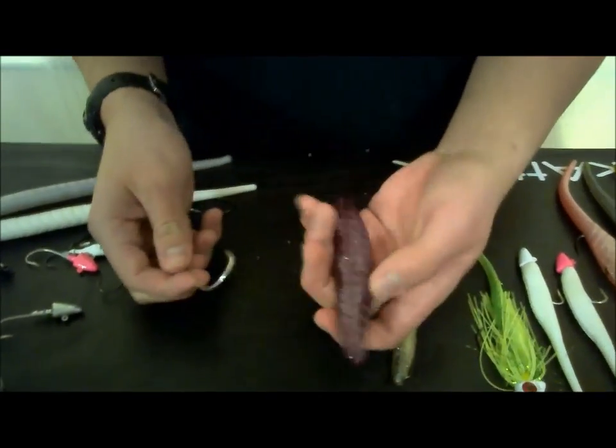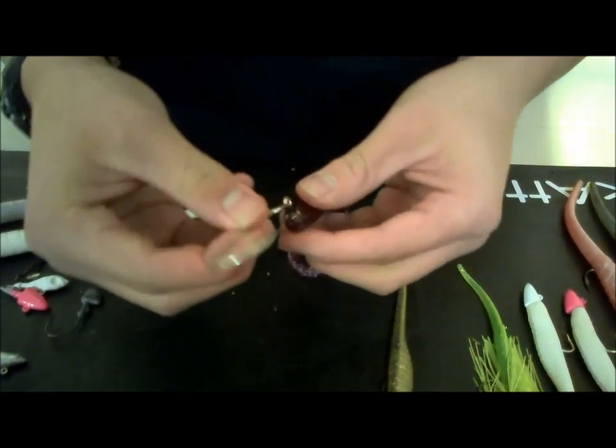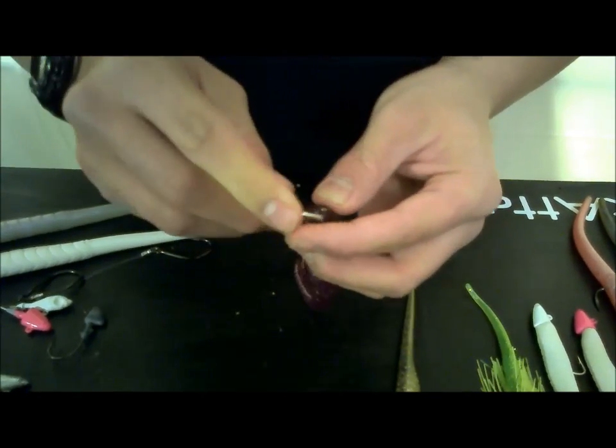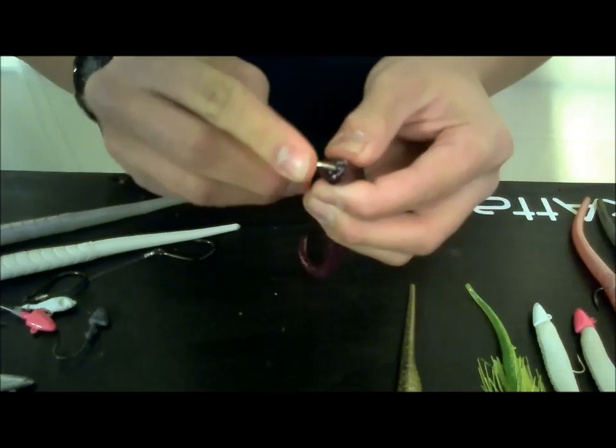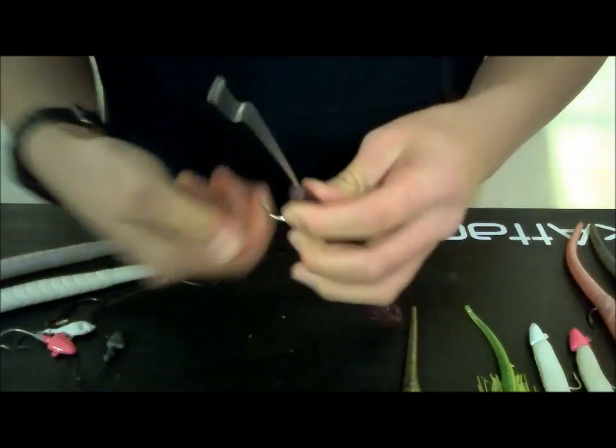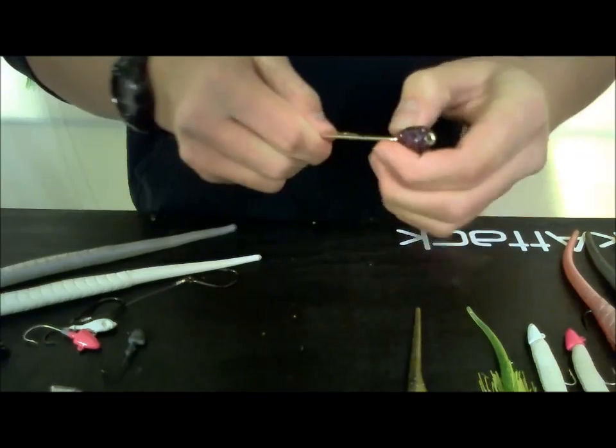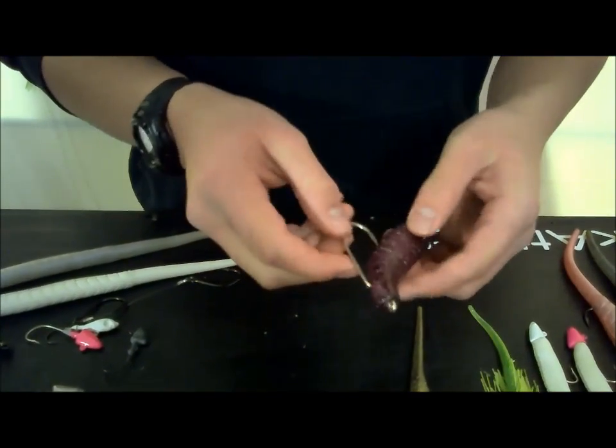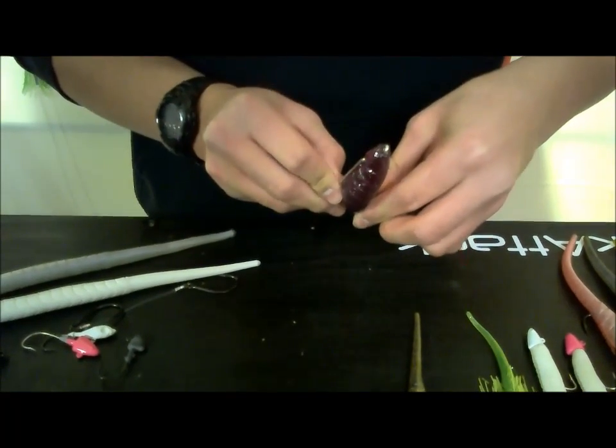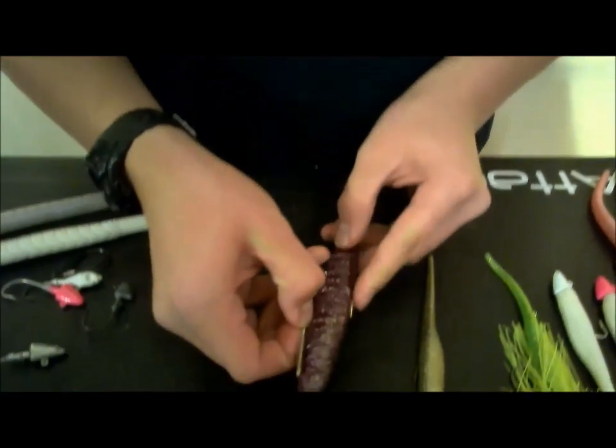So we're going to do the same thing with the big 10-inch BKD. I have a much bigger hook here. This one, I want to measure it out a little bit. So put this in pretty far. And then, poke it out. If I know where it's going to go, poke it out the top, there you go.